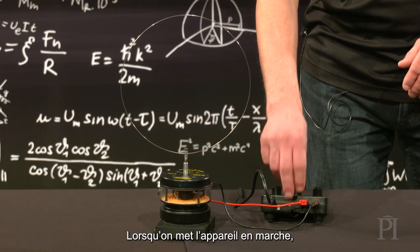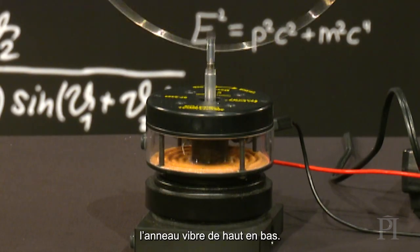This wire loop has a tip attached that lets us connect it to this device. When we turn the device on, the loop vibrates up and down.